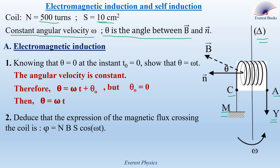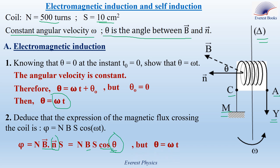Question number two: deduce that the expression of the magnetic flux crossing the coil is NBS cosine omega t. We know that the expression of the magnetic flux crossing a coil placed in a uniform magnetic field is given by N times B·n times S, where B·n is the scalar or dot product of vectors B and N. The dot product of two vectors is the product of their magnitudes times cosine of the angle between them. The magnitude of the unit vector N is 1. Theta is equal to omega t, so we replace theta by omega t. Therefore, phi is equal to NBS cosine omega t.